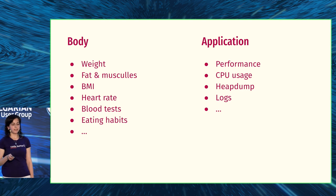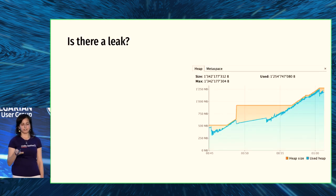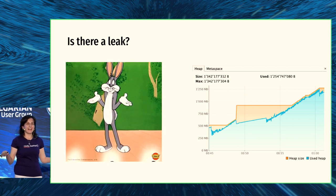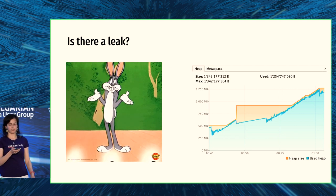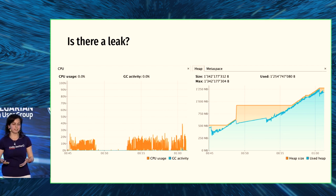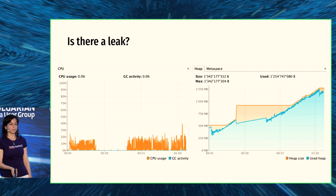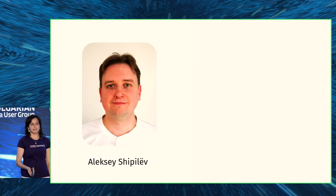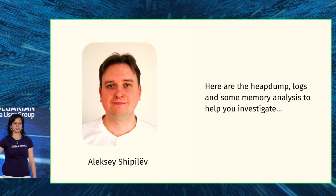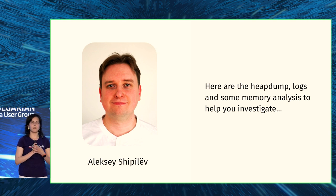It's very important to understand that just memory usage alone is not enough to say whether you have a memory leak or not. Look at a memory graph — is there any leak? The answer is: I have no idea. Maybe it's just the normal nature of consumption, just what your application should consume. But if you add a second graph showing CPU usage or GC activity, you can see whether GC tried to do some job and failed. If GC does its job and everything works fine, most likely there is no leak. Alexei Shepilov understood all these pain points and provided us heap dumps, logs, and even memory analysis to help us investigate everything.